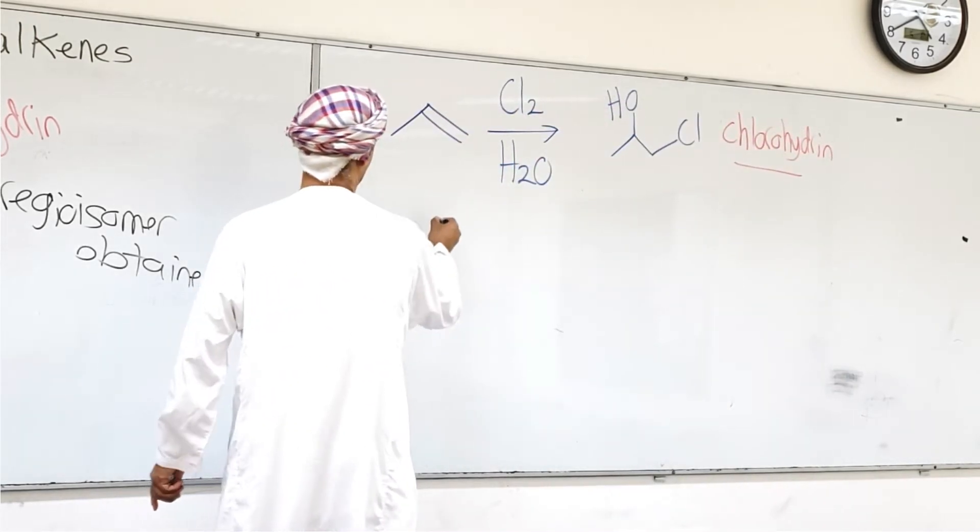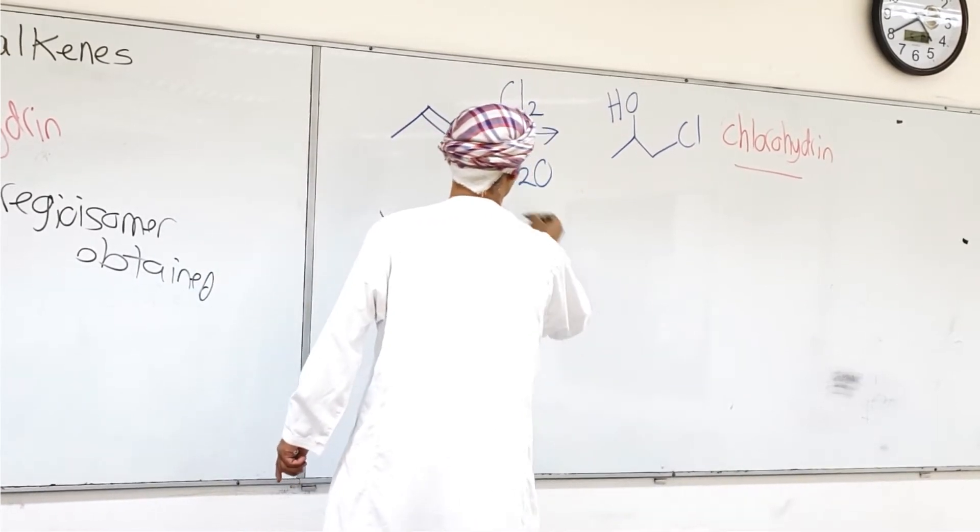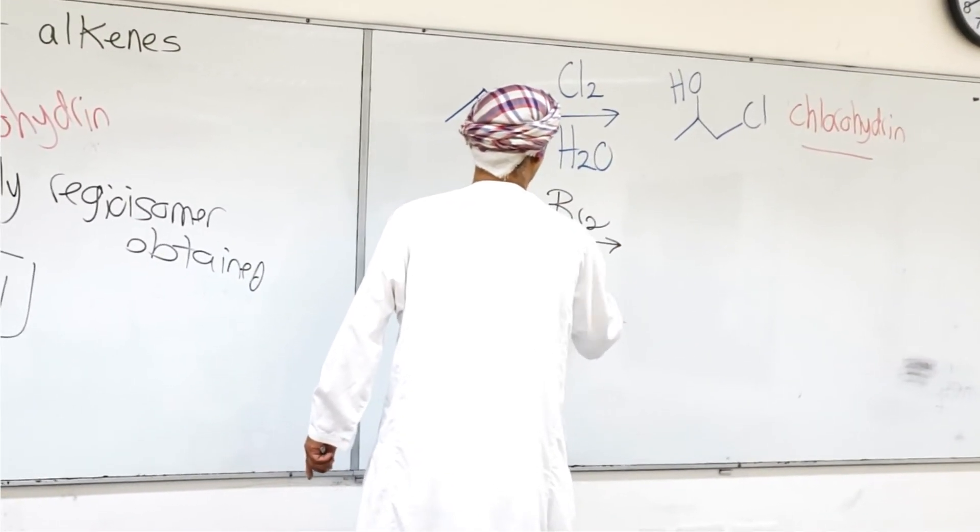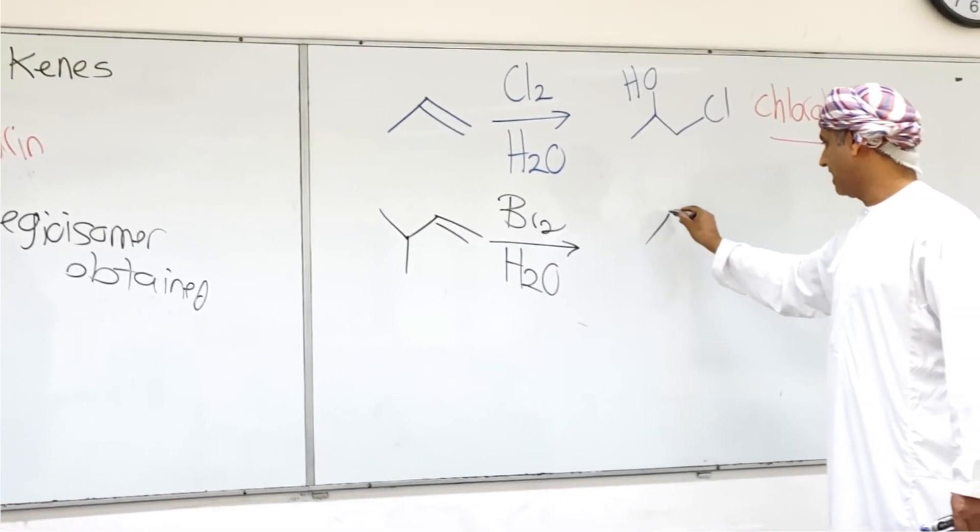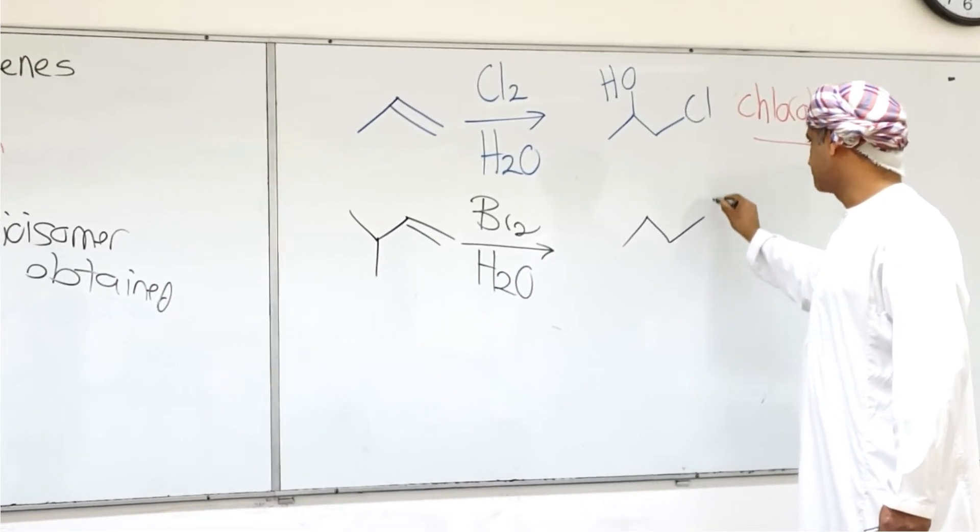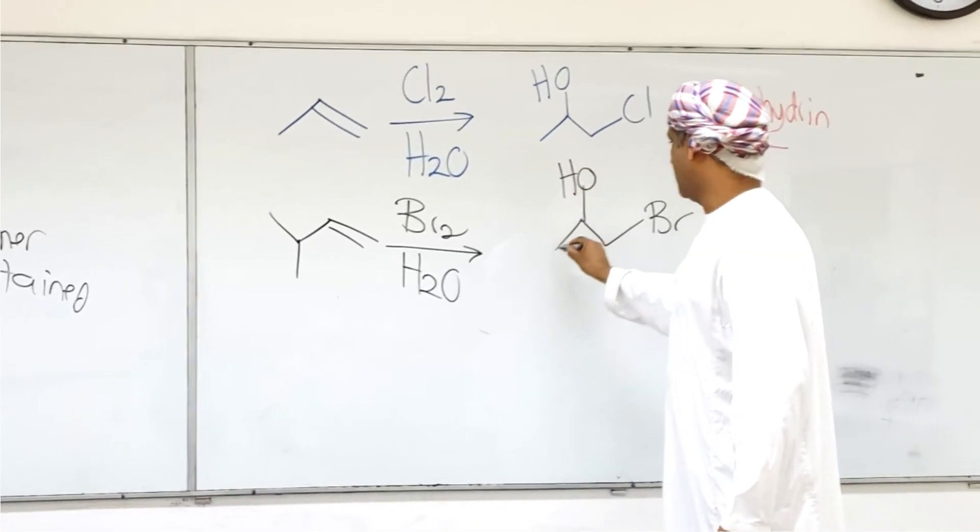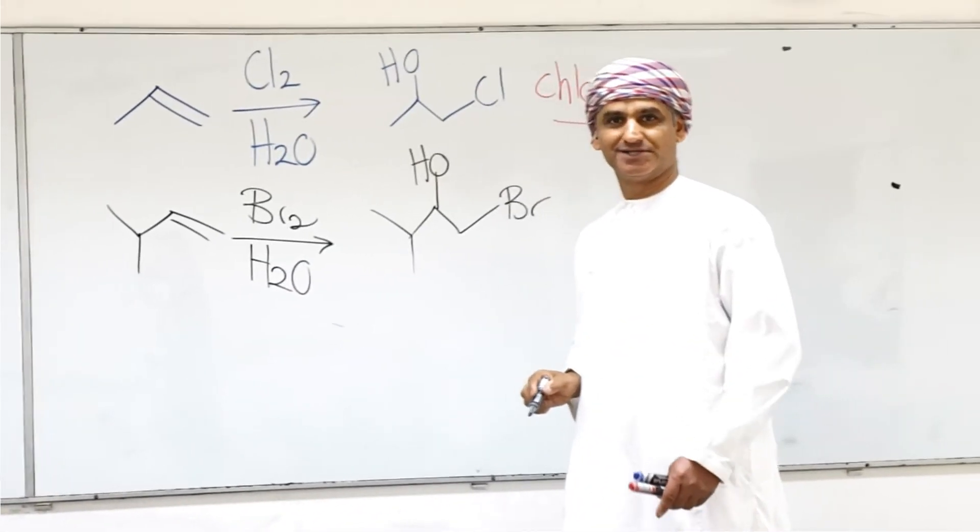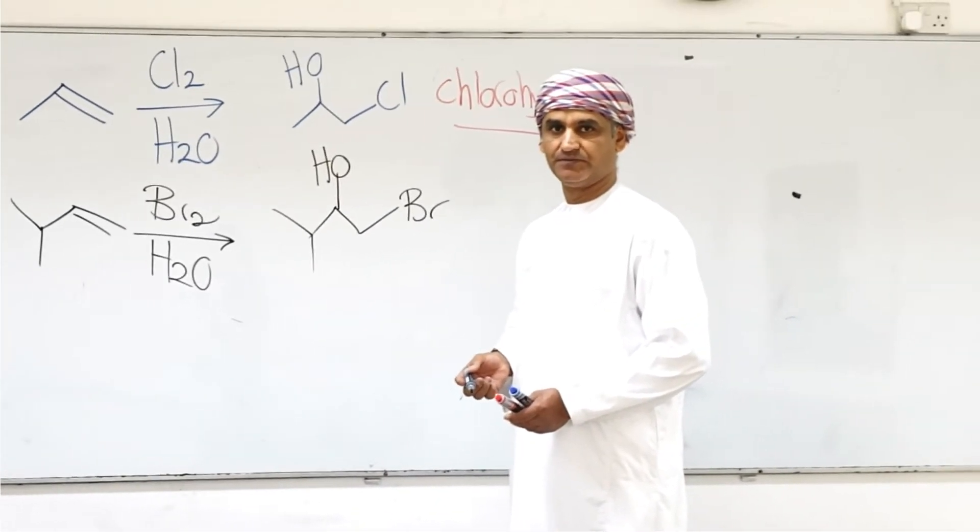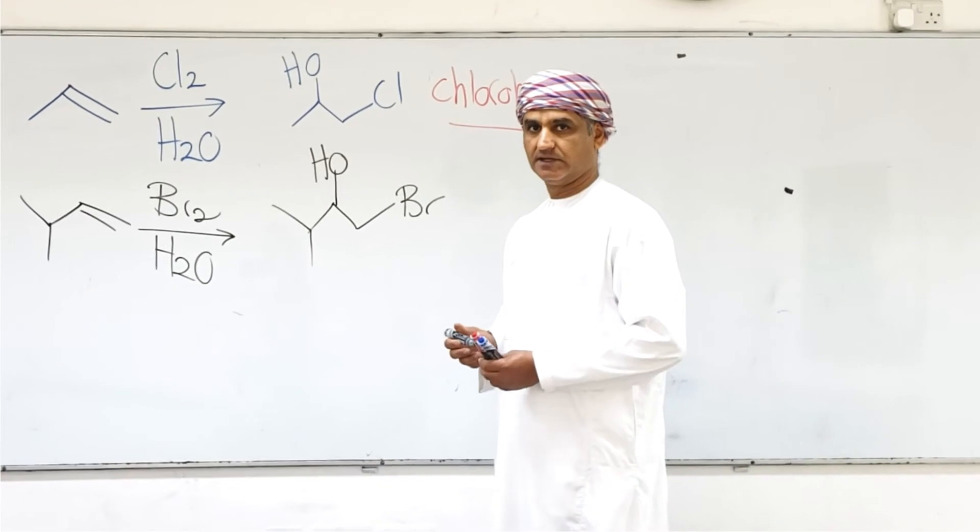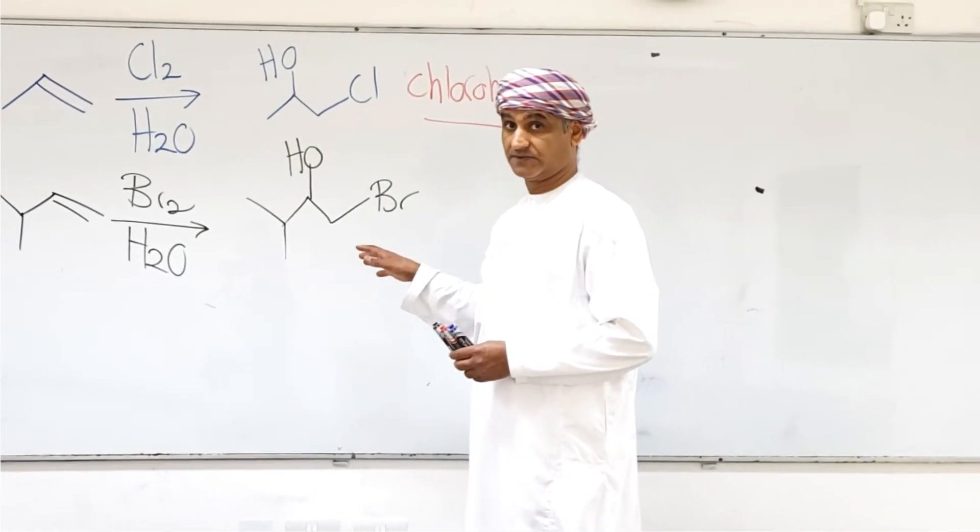So we can add bromine H2O to this alkene, and the product that is obtained is the Markovnikov's product. So bromine will point to the carbon with more hydrogens or less alkyl substituents.